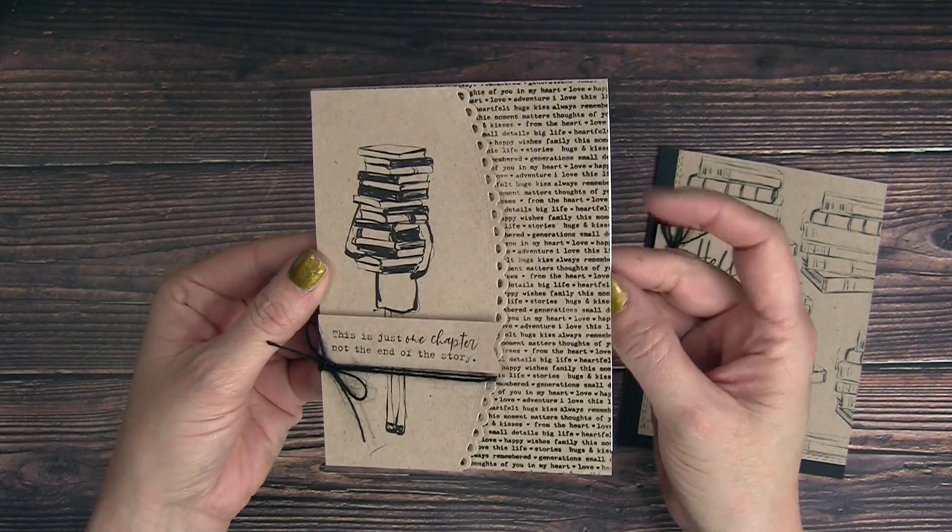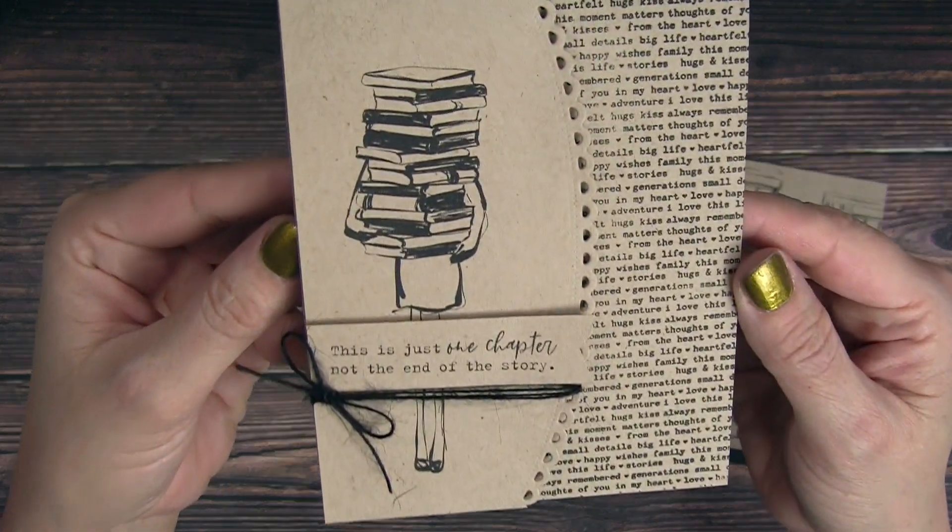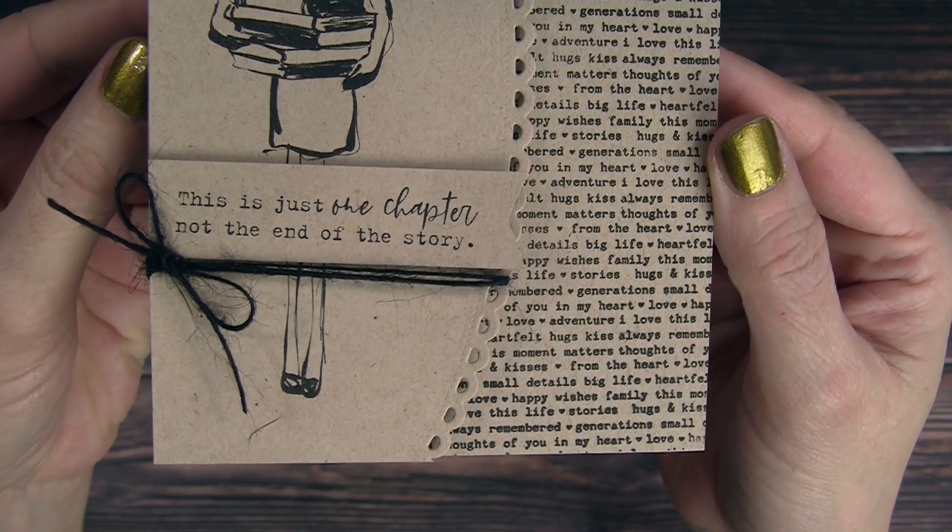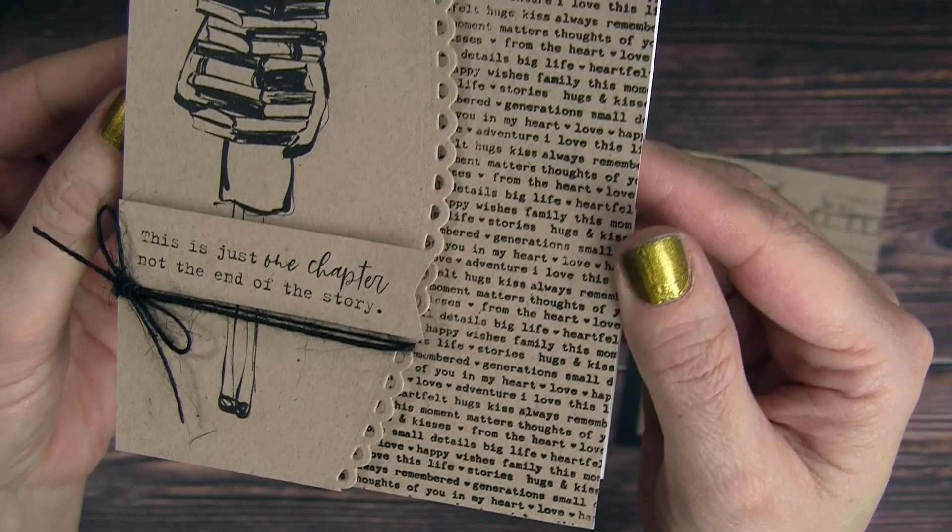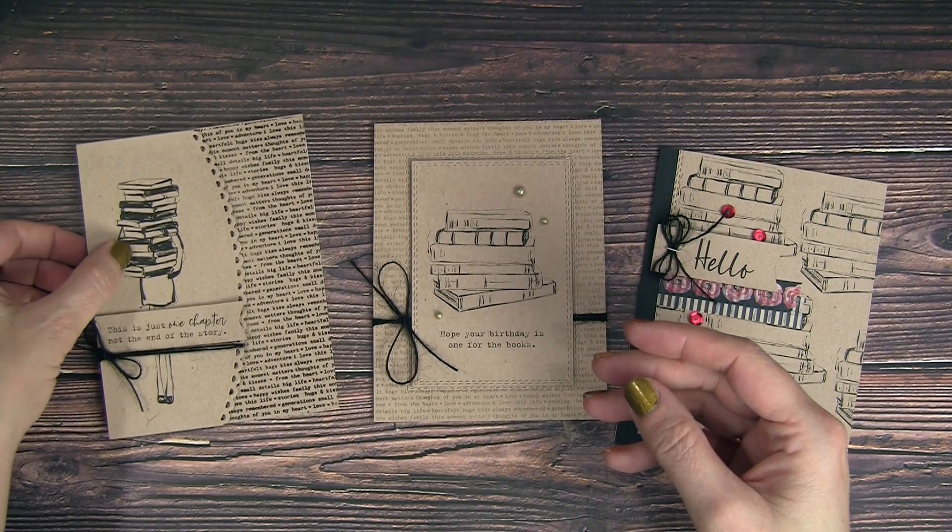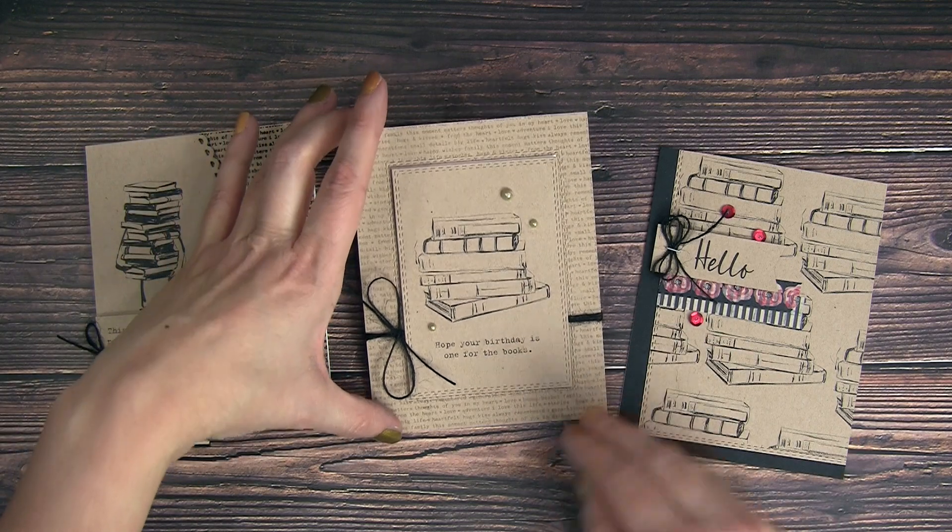Adding a bit more color with the red sequins here as well, just gluing that down with some glossy accents. So here are the finished cards. Don't you just love that girl and the Small Details background stamp that has the perfect print for a bookish look. I just love this supportive sentiment as well.